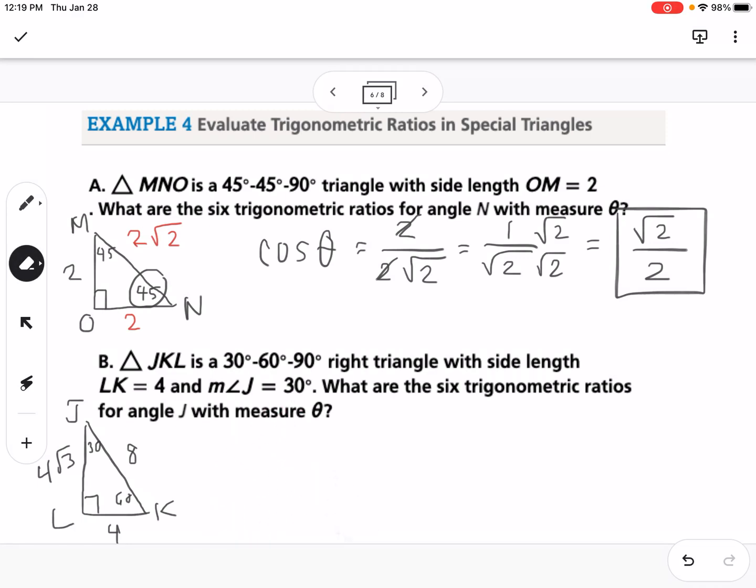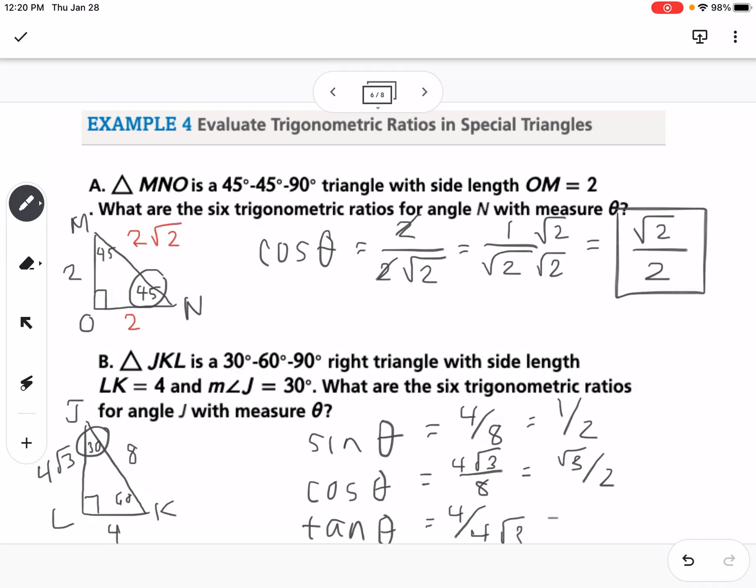We should know the relationships of that 30-60-90. We're looking at angle J. Sine opposite over hypotenuse would be 4 over 8, which we can reduce to 1 half. Cosine would be 4 square root of 3 over 8, which we can simplify to square root of 3 over 2. And tangent would be 4 over 4 square root of 3. The 4's cancel, so we'd have 1 over square root of 3, and then we need to multiply top and bottom by square root of 3. We get square root of 3 over 3.